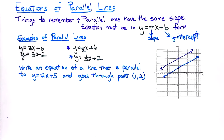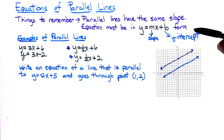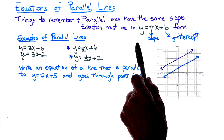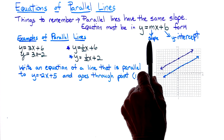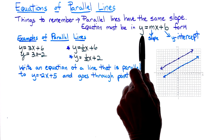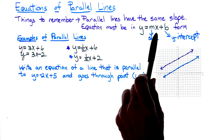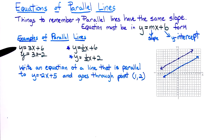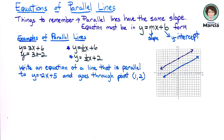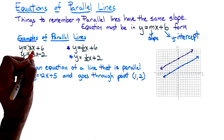This lesson is about equations of parallel lines. Things to remember: parallel lines must have the same slope, and the equation must be in y equals mx plus b form to see the slope and y-intercept. For example, y equals 3x plus 6 and y equals 3x minus 2 — the slopes are the same, only the y-intercepts are different.